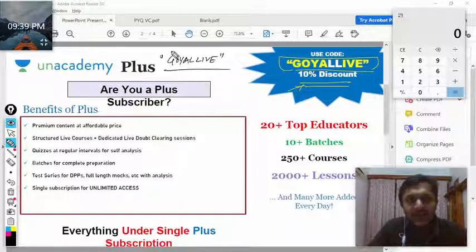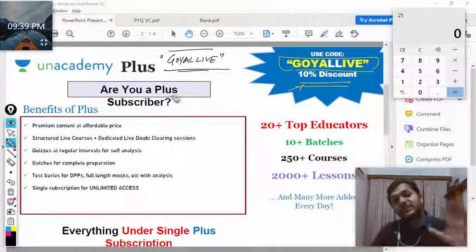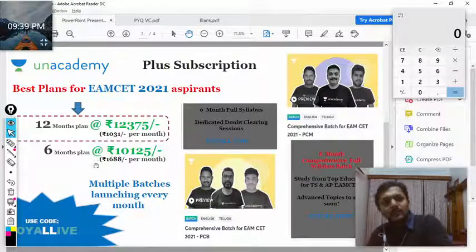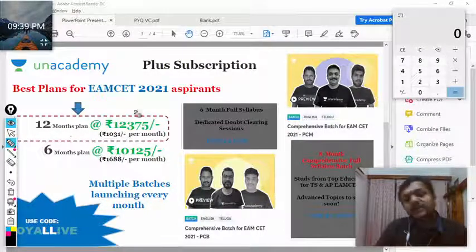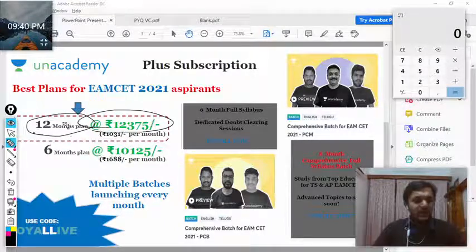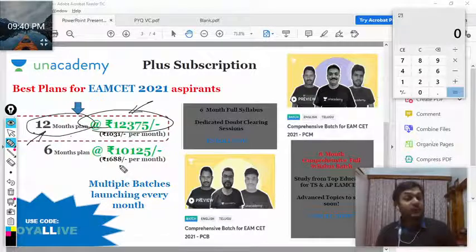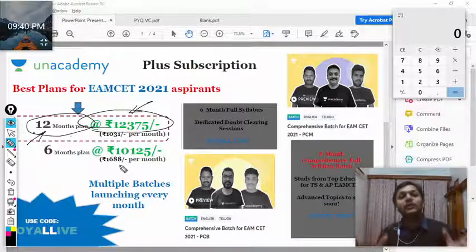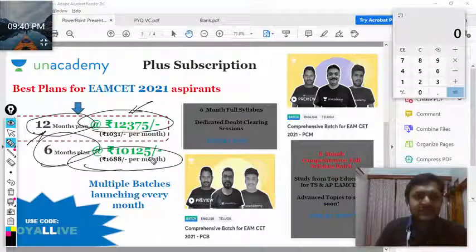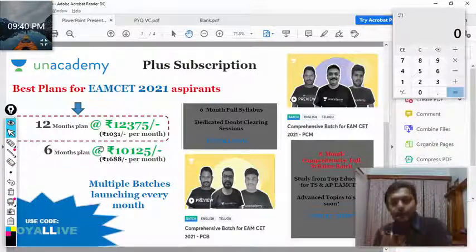The prices are already very very less, but if you are looking for even better discount you can use this code: GoelLive. This code will give you 10% discount there. For 12 months the price is 12,375 which becomes only 1000 rupees per month. For six months it's 700 rupees per month but is costlier in comparison, so it's better to go for the 12 month plan.